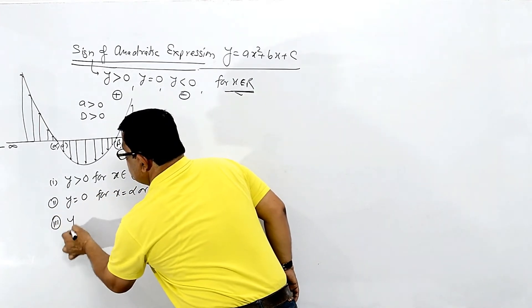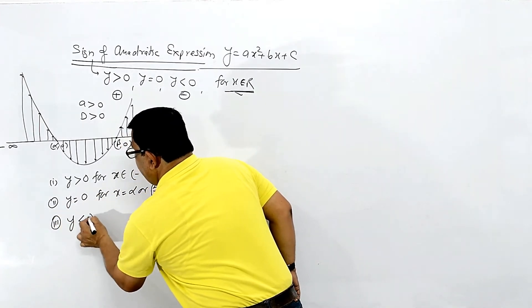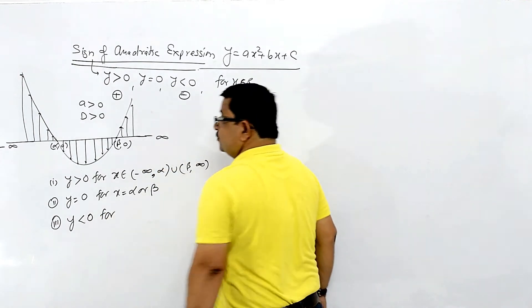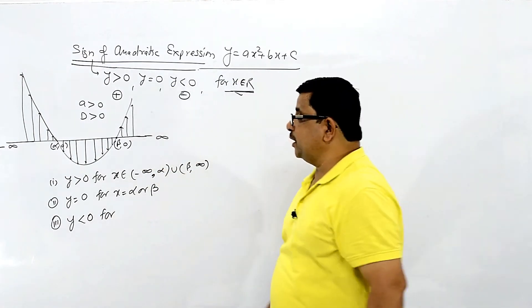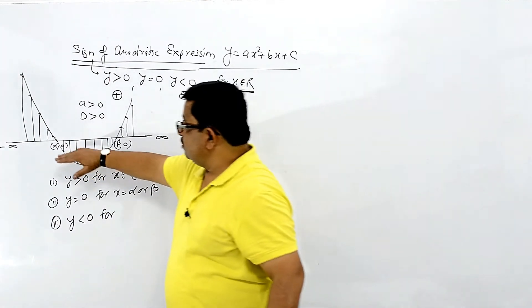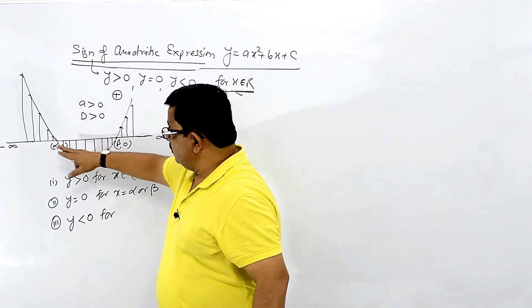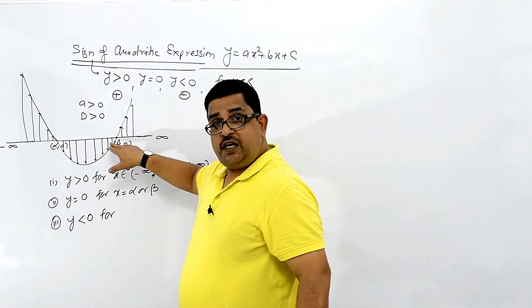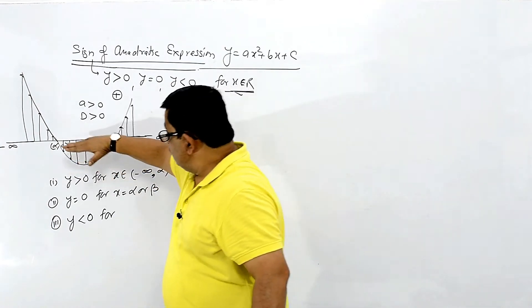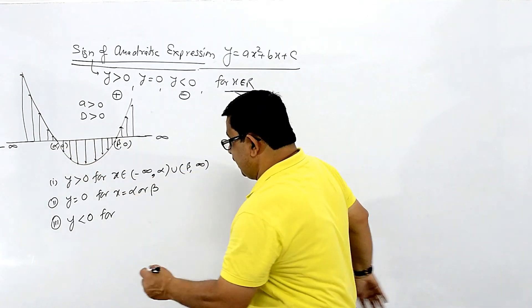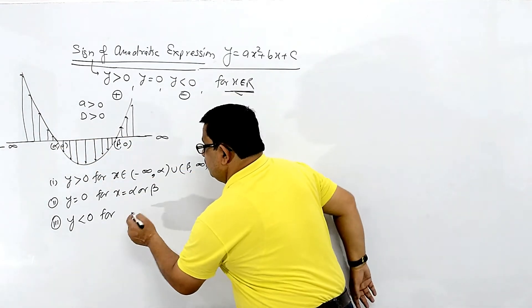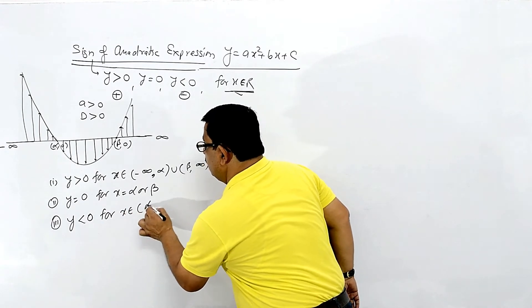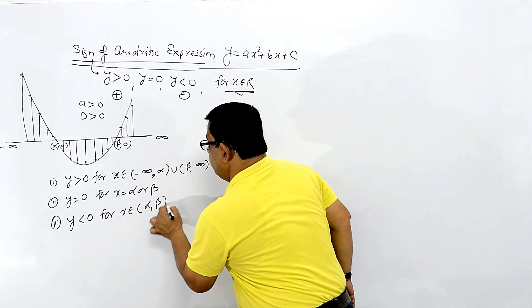The third case is y negative. For y less than 0, x belongs to the open interval alpha to beta, i.e., x ∈ (α, β).